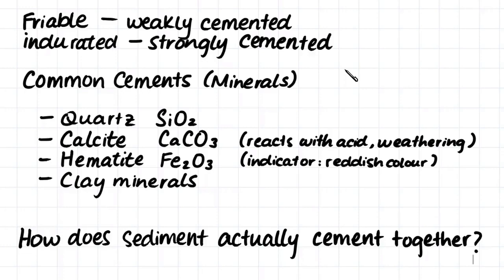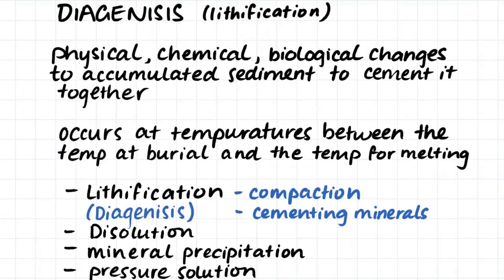But how does the sediment actually cement together? The sediment cements together through a process called diagenesis, which is a term often interchangeable with lithification. Diagenesis means there is a physical, chemical, or biological change to the accumulated sediment which cements it together. This occurs at temperatures between the temperature at which it was buried and the temperature required for melting the sediment. Diagenesis includes lithification — the compaction of the sediment as it is buried and then the precipitation of the cementing material into the voids. Diagenesis can also include dissolution, the precipitation of minerals, and the formation of a pressure solution.